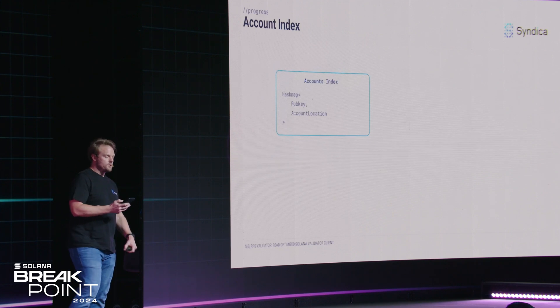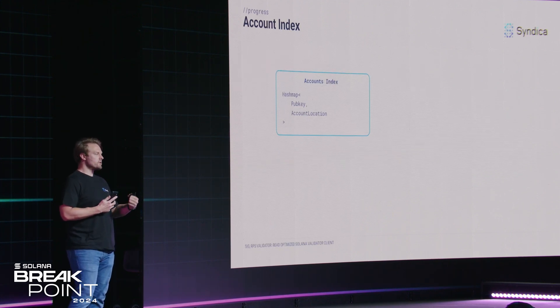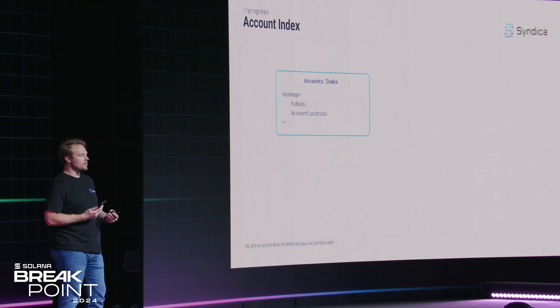That's the whole purpose of the account index. The account index essentially is like a hash map — a data structure where you provide some data called a key, in our case a pub key, and the hash map very quickly returns data previously associated with that key. In our case, that's an account location, which tells you either it's in the cache, or exactly which file you need to look at and where within that file the account is located.